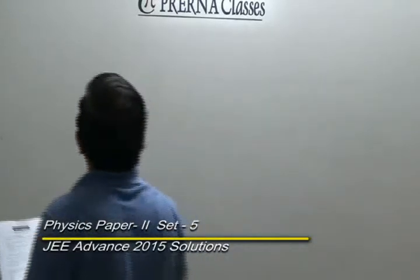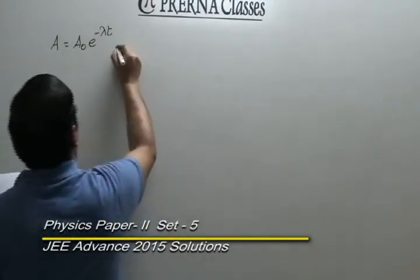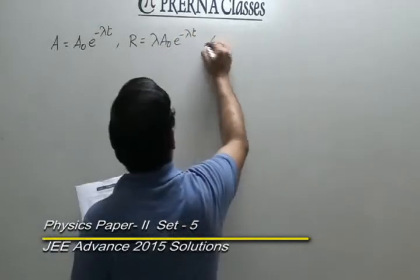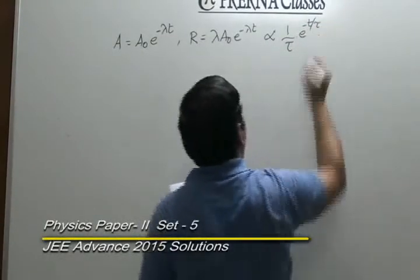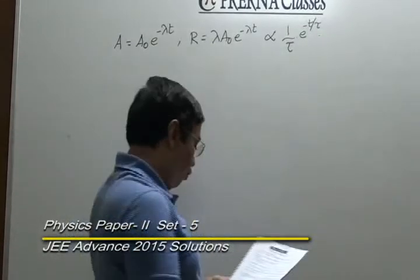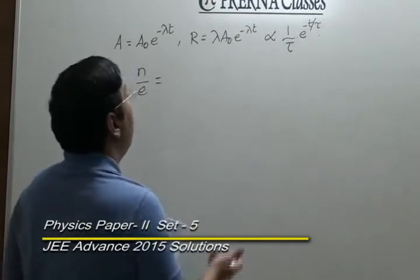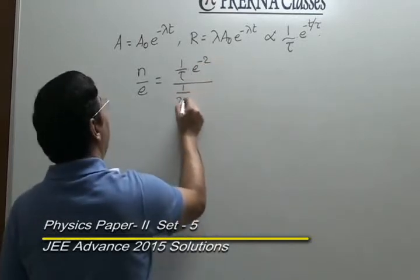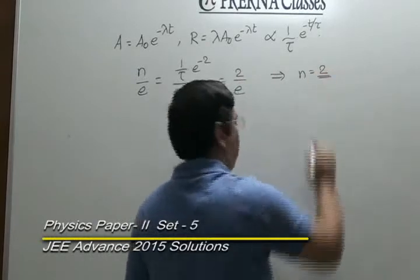The third question deals with radioactive material — its activity and rate of change of activity. The activity at any time takes a known exponential form, and the rate of change is proportional to a decay term. Looking at the ratio M/E: for the first material with mean life τ, we get 1/(τ·e²). For the second material it is 1/(2τ·e), giving the ratio as 2. So N equals 2.